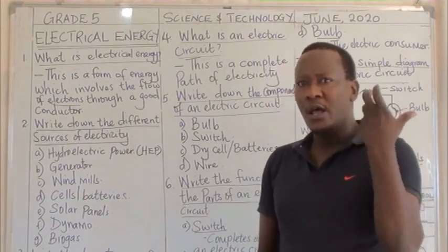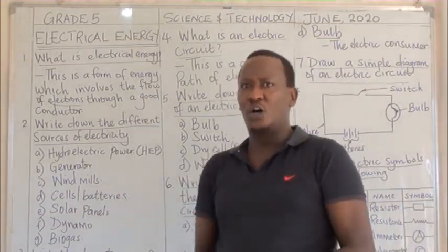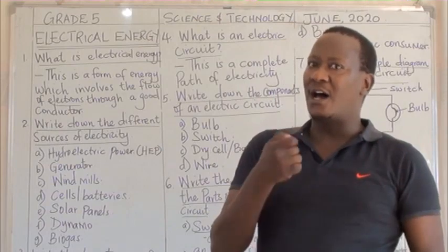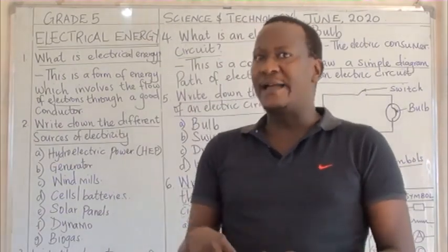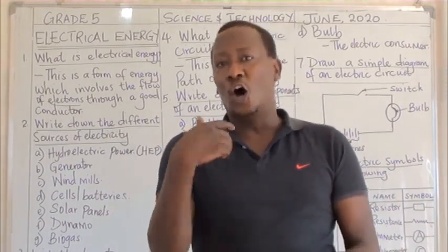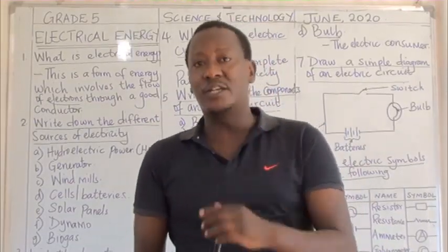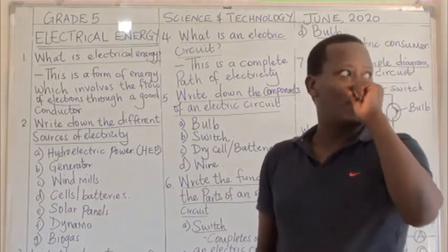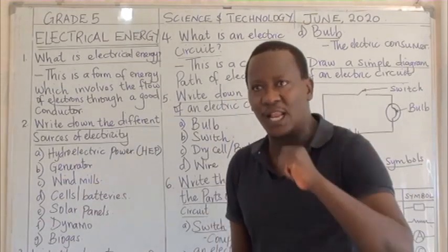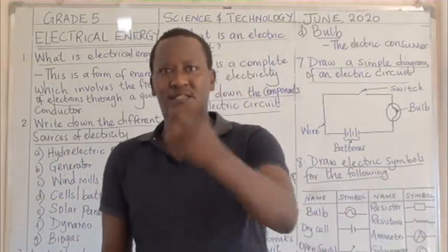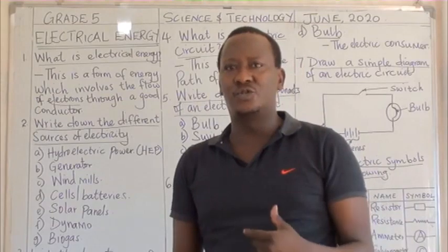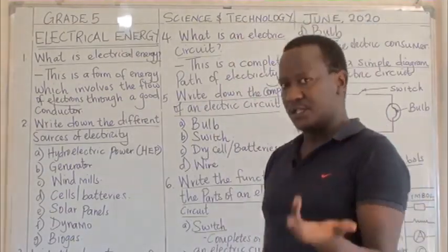Number four, we have cells or batteries. At home we use torches, radios, and remotes — they use batteries or cells, so those are also sources of electricity. Fifth, we have what we call solar panels. They collect energy from the sun, store it and then convert it into electricity that is used later.